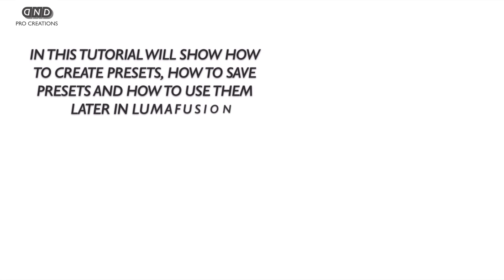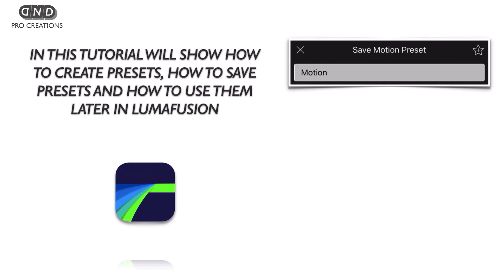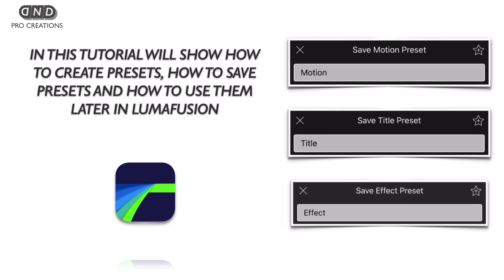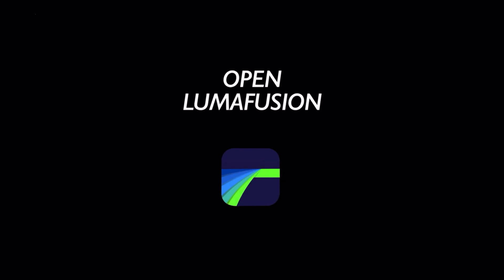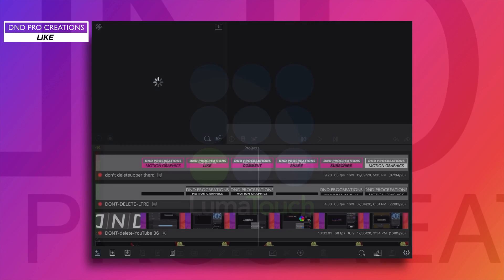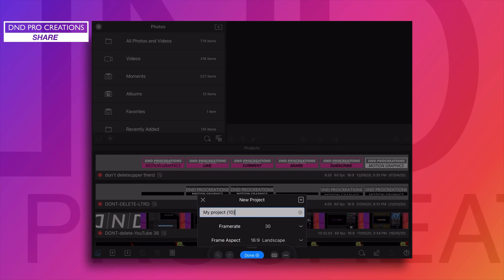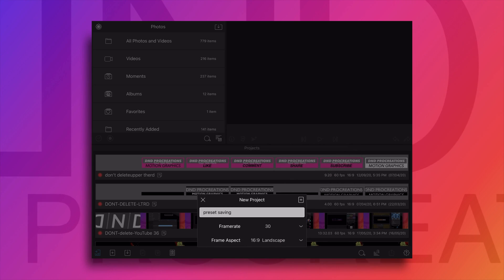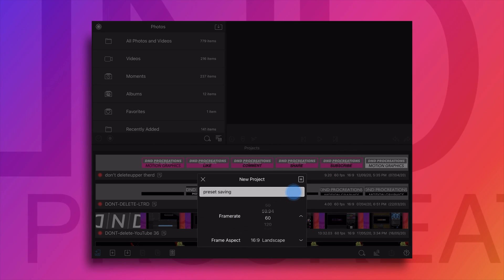Hello everyone. In this tutorial we'll show how to create transitions and effects and save them as a preset. Today we'll be covering motion presets, title presets, and effect presets. Creating transitions and effects takes a lot of time, so every time you want to apply that type of effect you have to spend more time. In LumaFusion we have an option to save those transitions as presets and we can use them later without spending much time — just select that preset and apply.